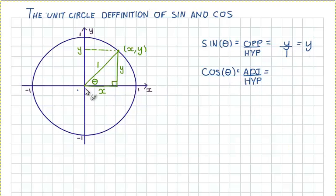For cos θ, it's the adjacent side over the hypotenuse. So the side that's adjacent to this angle here is this x down here. So the adjacent side length is x. And we're dividing by the length of the hypotenuse, and once again that's 1, which means that cos θ equals x.